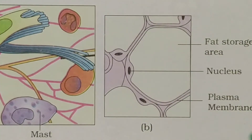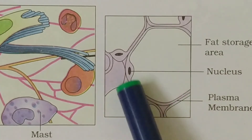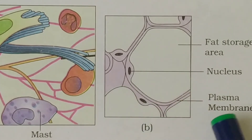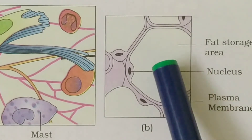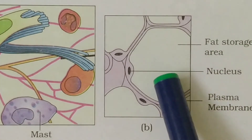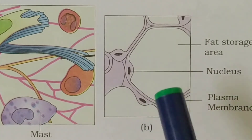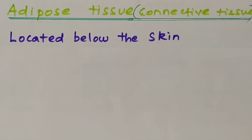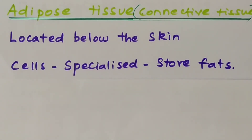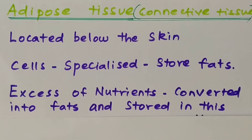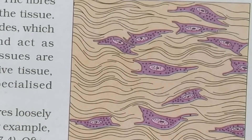This is the structure of adipose tissue. It contains specialized cells that store fat. When excess nutrients are consumed, they are converted into fat and stored in this adipose tissue, which is also present below our skin.